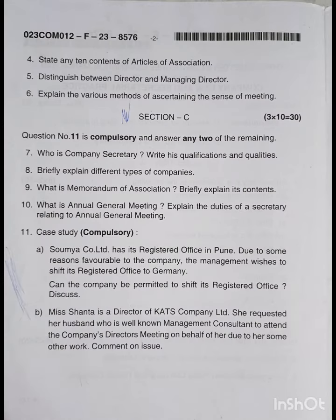Question number five: distinguish between director and managing director. Question number six: explain the various methods of ascertaining the sense of a meeting. In Section C, question number one is compulsory, and answer two of the remaining questions.